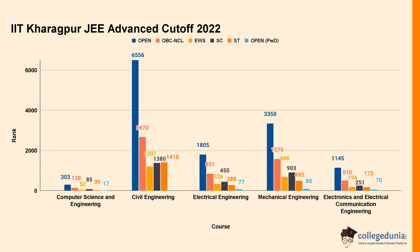For Computer Science and Engineering at IIT Kharagpur in 2022, OBC-NCL cut-off rank was 138, EWS 52, SC 85. For Civil Engineering, cut-off rank was 6556 for Open category, 2670 for OBC-NCL, 1207 for EWS, and 1380 for SC.